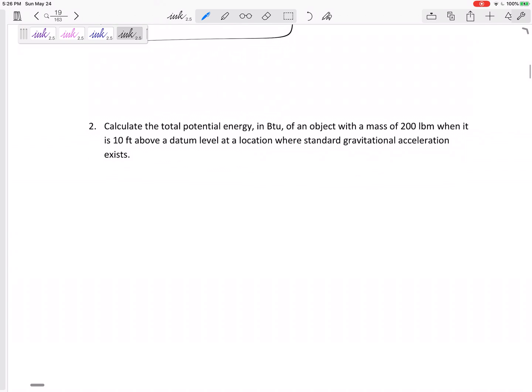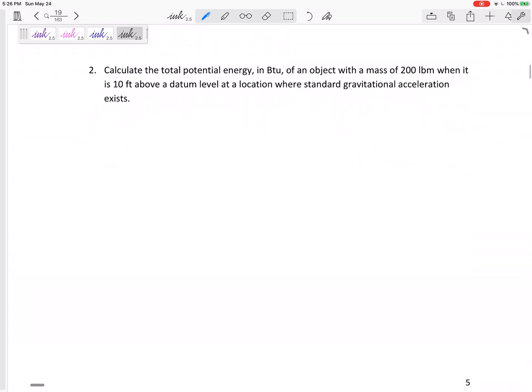So now look at number two. Let's calculate the total potential energy in BTUs of something with a mass of 200 pound mass when it is 10 feet above some level. Standard gravitational acceleration would be 9.81 meters per second squared but we are in English units: 32.2 feet per second squared.